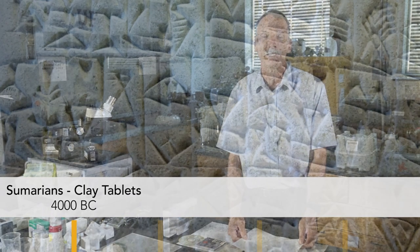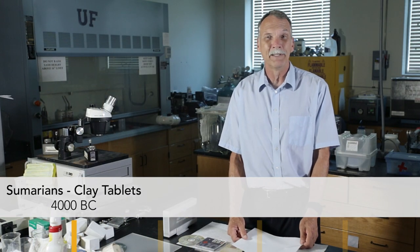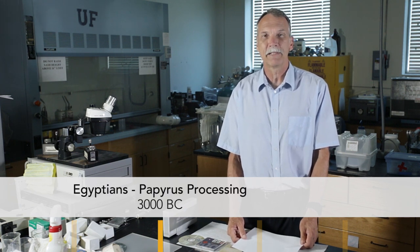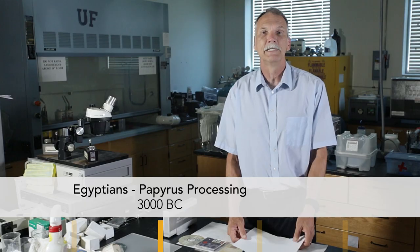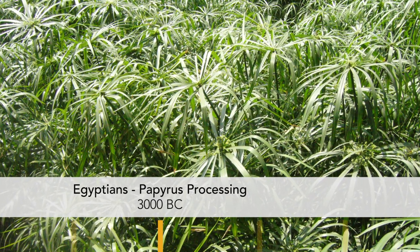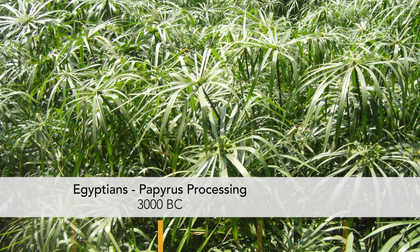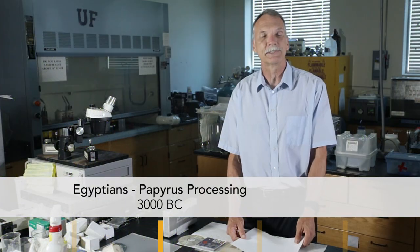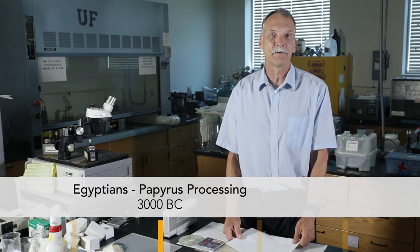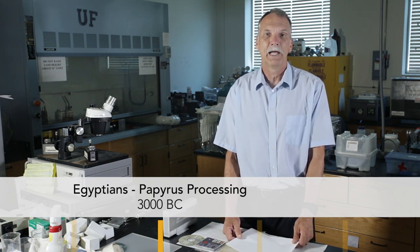The Egyptians decided to do something thinner, so they took papyrus, which is a plant, and took the reeds out. They found that if they beat them, soaked them, layered them down, and pressed them together, the sugars in the papyrus would actually allow those pieces to stick together and form a paper-like substance. They used that for writing for a long time.